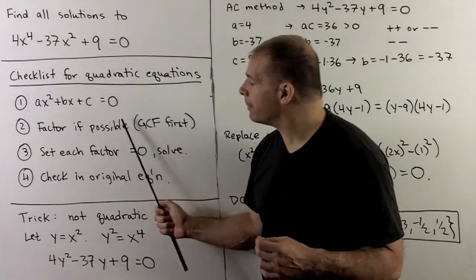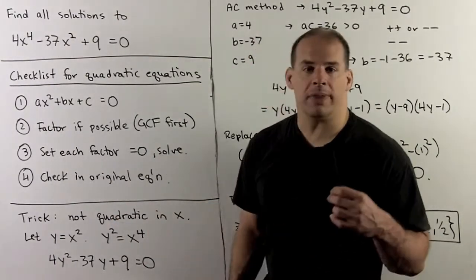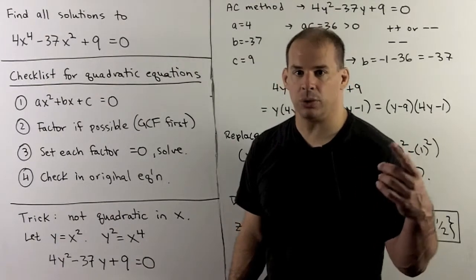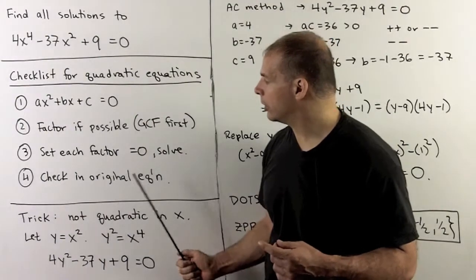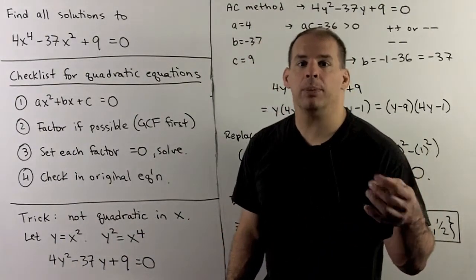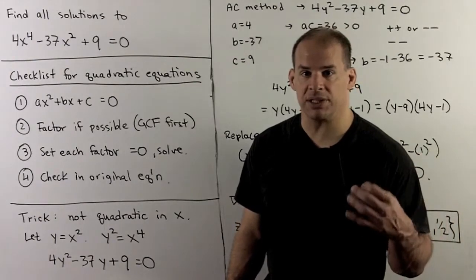If we can factor, then we apply the zero product rule. That means we take each factor, set it equal to 0, solve, and you get a solution. Final step, since we have an equation to check our work in, we do a check to make sure we haven't made any mistakes.